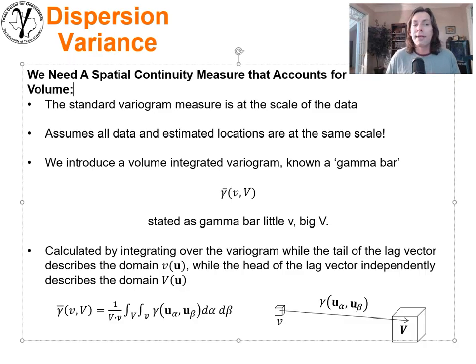In order to get started with more analytical solutions, we need a spatial continuity measure that accounts for volume. We can't work with the variogram we're using right now. The variogram we calculate is from sample value to spatial sample value and does not have the ability to account for perhaps we're dealing with making comparisons between things that have two different scales, or that we're working with something that has a very large scale and we want to integrate over that volume.